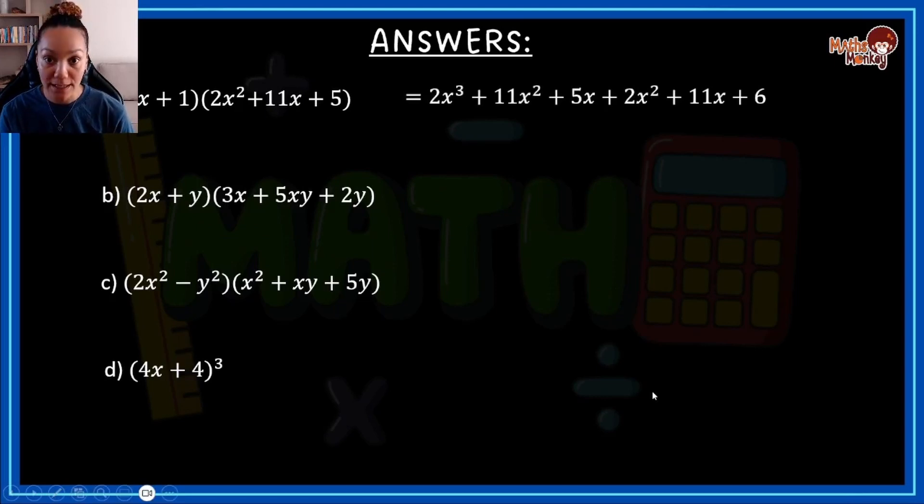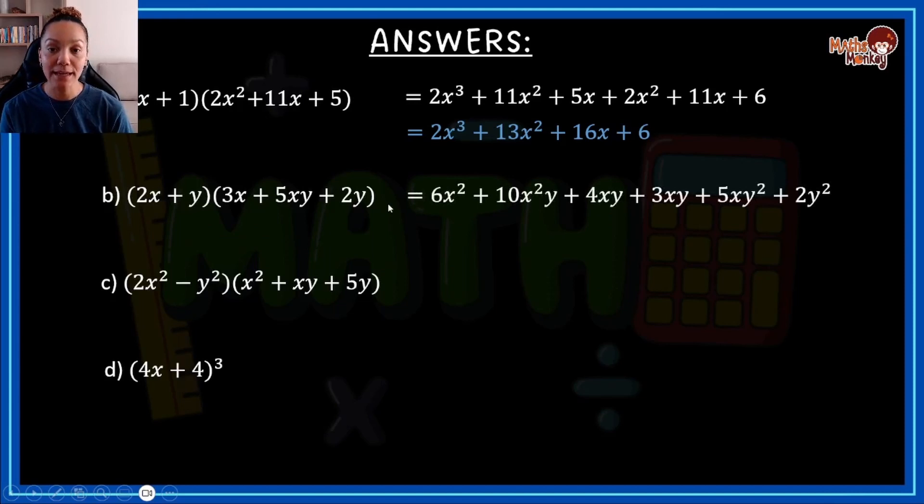So for the first one, this should have been your answer when you simplified. And then this would be your final answer once you group like terms. It's 2x to the 3 plus 13x squared plus 16x plus 6. I suggest looking here, if you didn't get this right, to see where you went wrong.